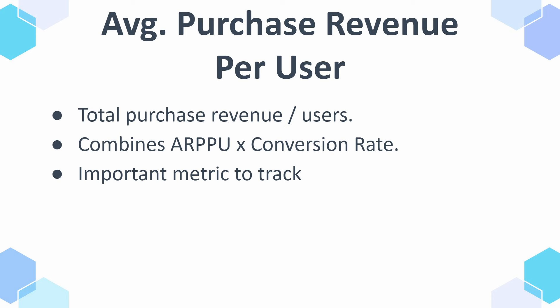Then we have average purchase revenue per user, which is similar to average order value but in this case we're looking at all users, not only those that bought. So it's total purchase revenue divided by all users.